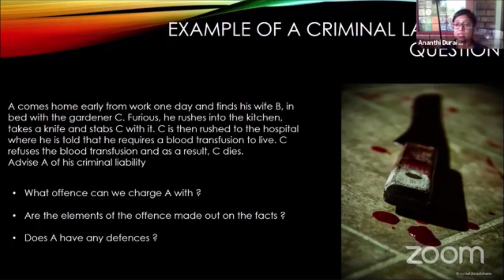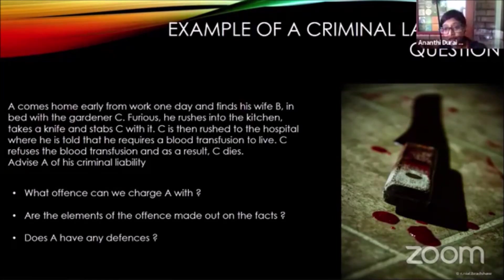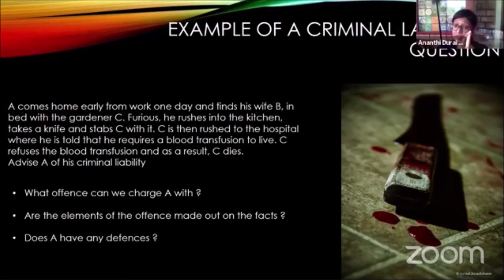We now have to consider A's criminal liability. A stabbed C; C was taken to hospital, required a blood transfusion, refused it, and died. The ultimate consequence of A's actions is that C has died. So we must consider: what offence can we charge A with? Are the elements of the offence made out — is the actus reus made out, is the mens rea made out? And does A have any defence? This is how you answer an exam question: what are the offences, are those elements satisfied on the facts, are there any defences, and can the accused rely on those defences?